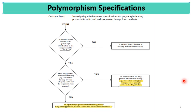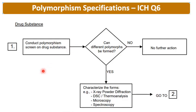The theme behind these specifications is whether the polymorphic form present in the formulation or drug product is affecting formulation performance, and whether performance testing like dissolution is relevant to changes in polymorph ratio. Regarding ICH Q6 for drug substance: conduct a polymorphism screen. If no different polymorphs can be formed, no further action is required for specification.